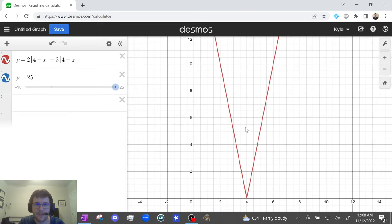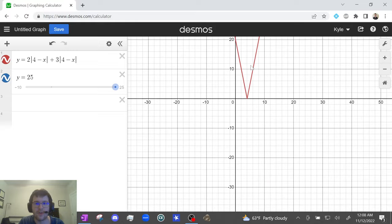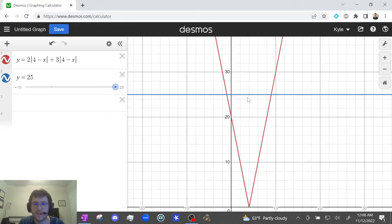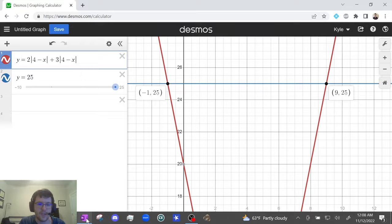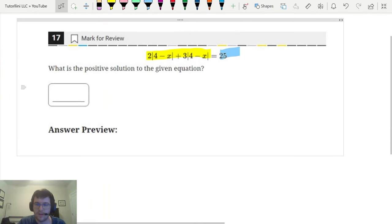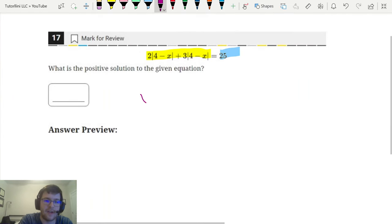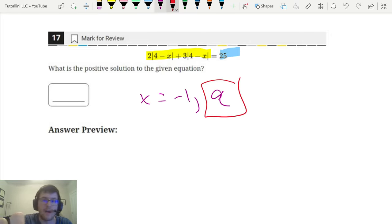Again, I can't really see where it intersects, so I'm going to zoom out using the scroll wheel. Oh, there it is. So let's click right here and right here. So my two solutions, again, we only care about x, are negative 1 and 9. So let's write that down. Negative 1 and 9. And it only cares about the positive solution. So we're going to go with 9 as our final answer.